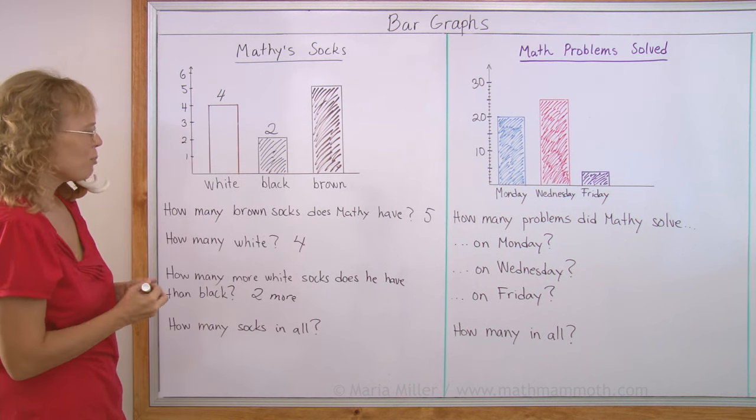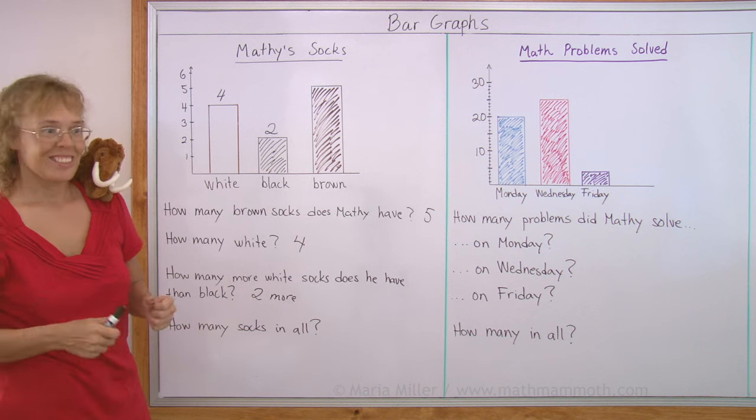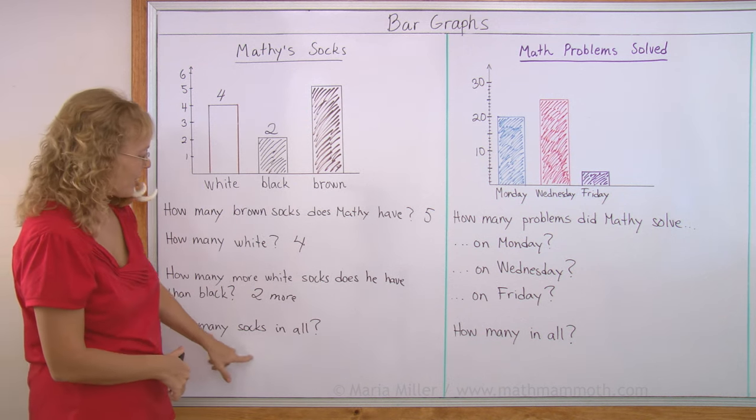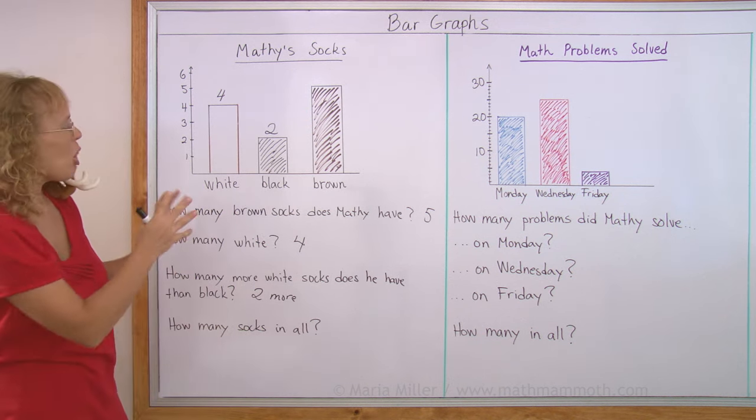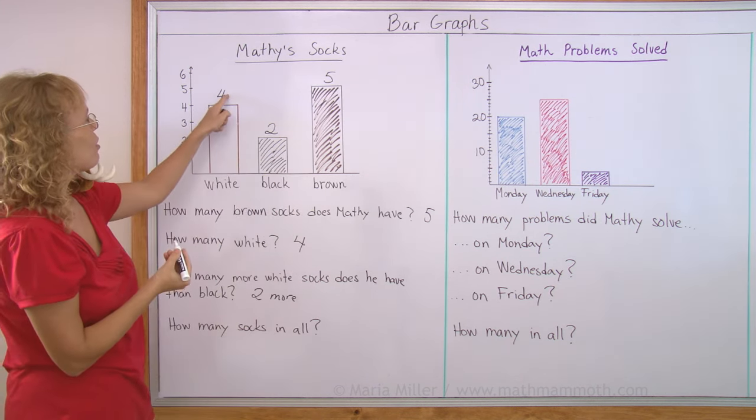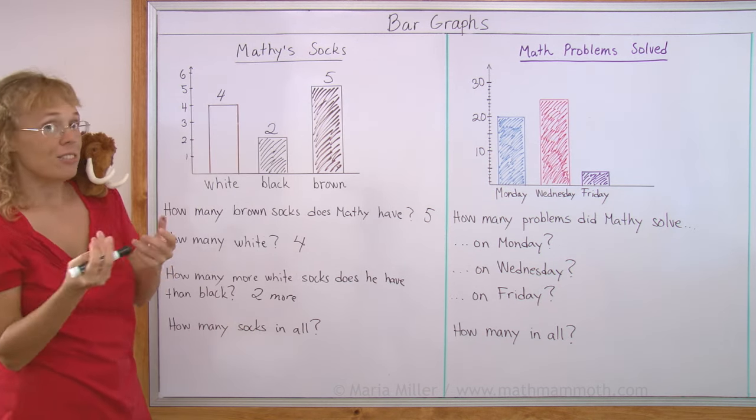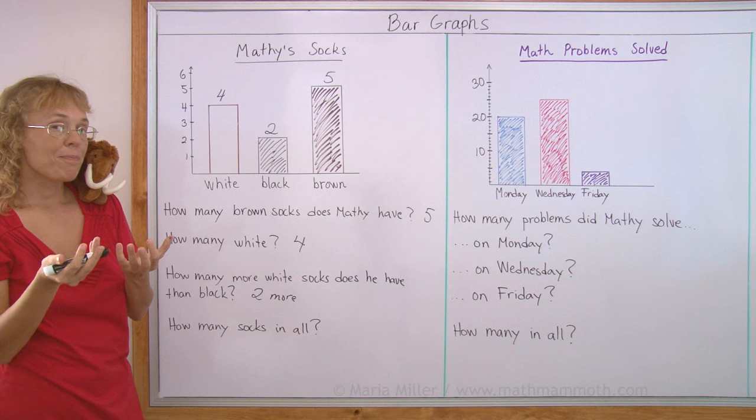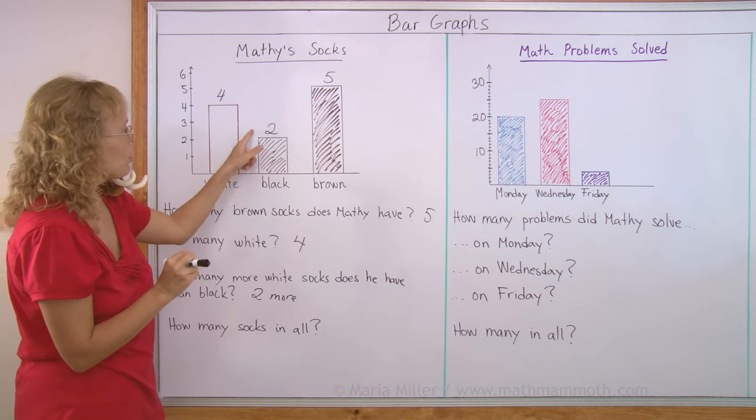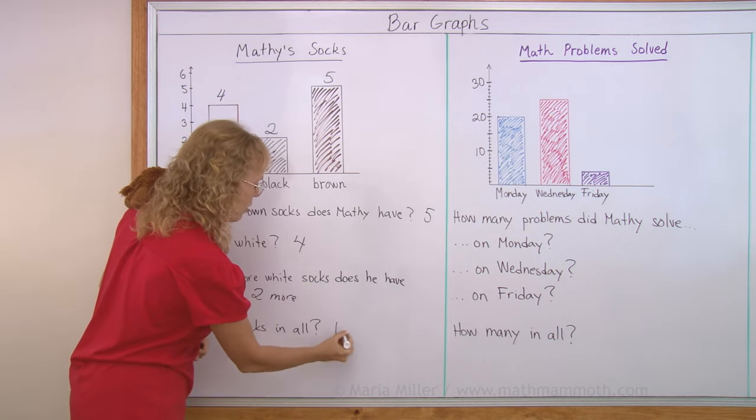Another question, Matthew - how come you only have two black socks? You have four paws. How many socks in all? How many socks altogether, total, does Matthew have? We need to add these numbers. There's four and two and five. Okay. For example, I'll add five and four. Five plus four? Nine. And then two more. You count. Nine, ten, eleven. Eleven socks in all. Okay.